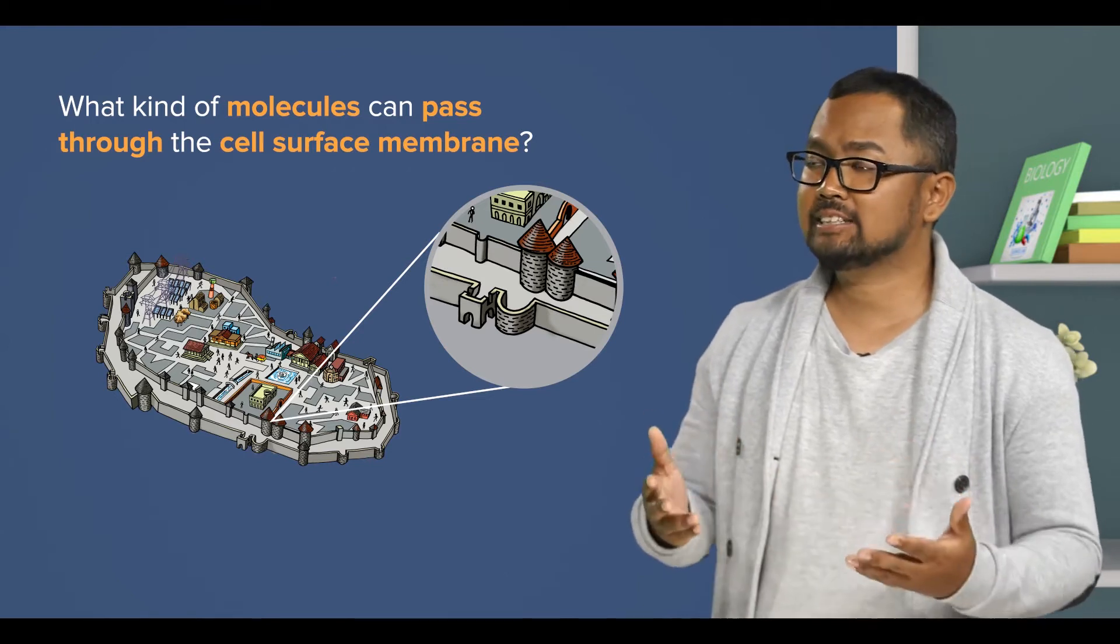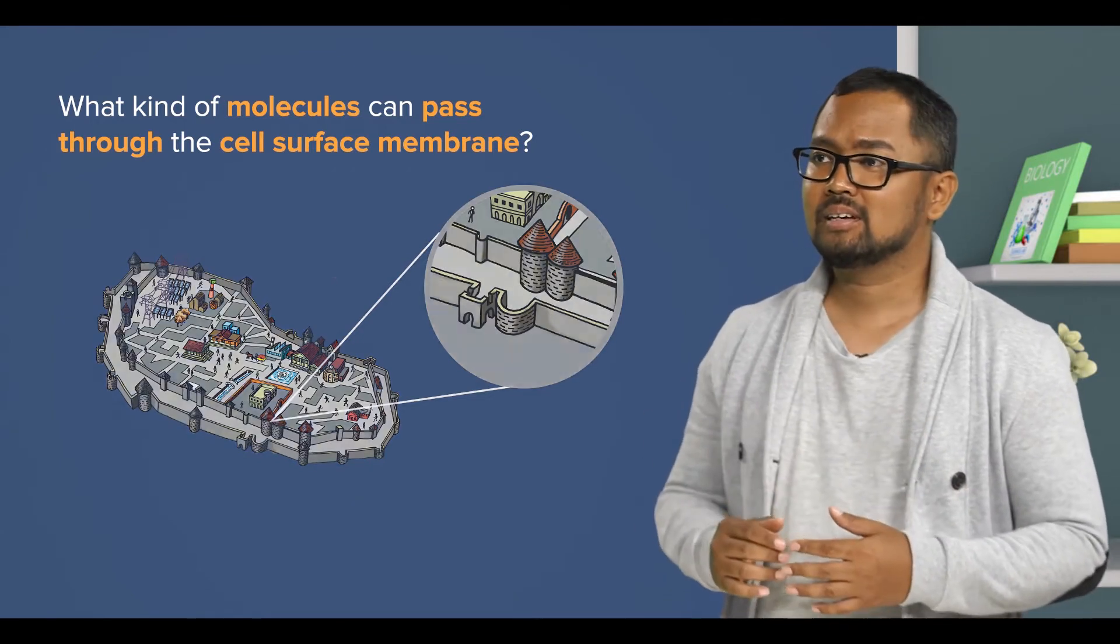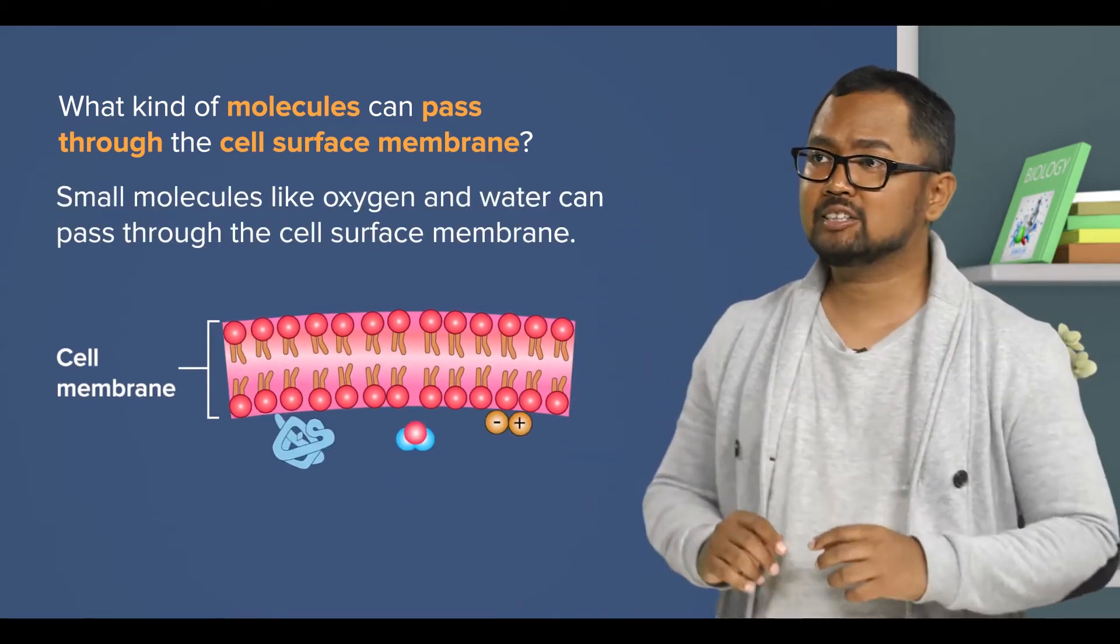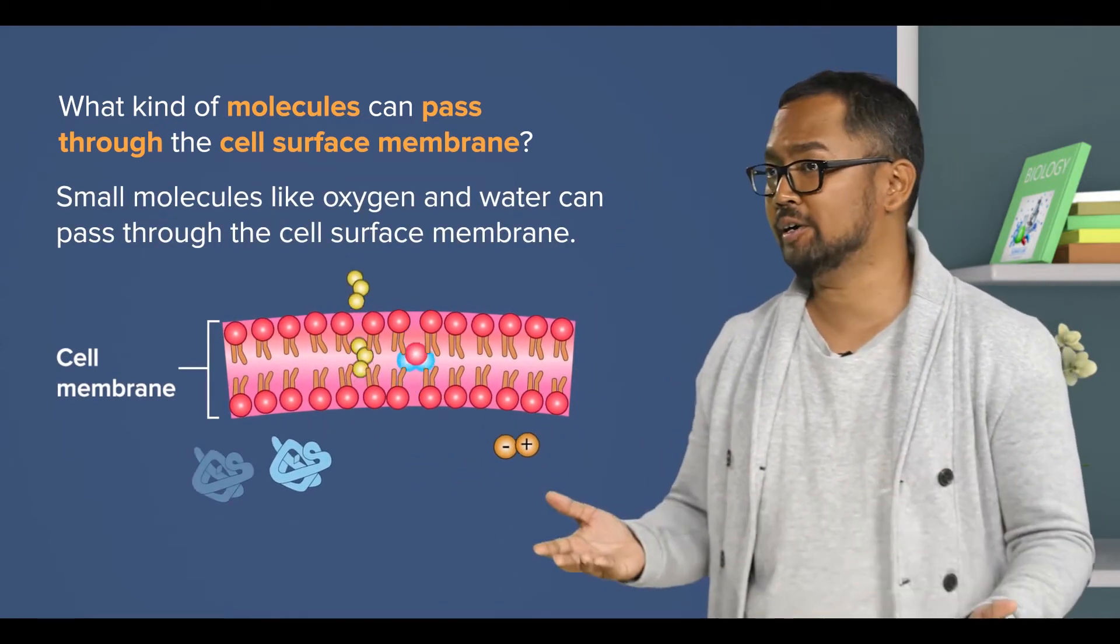Thus, they can enter through small gaps. In the case of cells, the smaller invaders are the small molecules like oxygen and water.